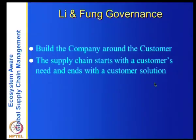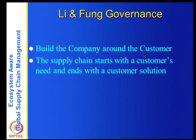Now let us look at governance. As discussed, governance has three things: selection of partners, supply chain planning where for each order you select suppliers and logistics providers, and execution. Li and Fung follows this governance model: build the company around the customer. Its customers are all large businesses requiring individual attention, so it is customer-oriented — each customer has a dedicated manager. The supply chain starts with the customer's need and ends with the customer solution.